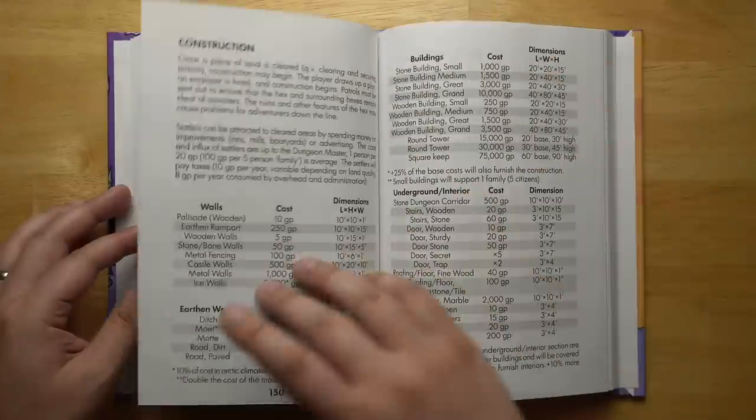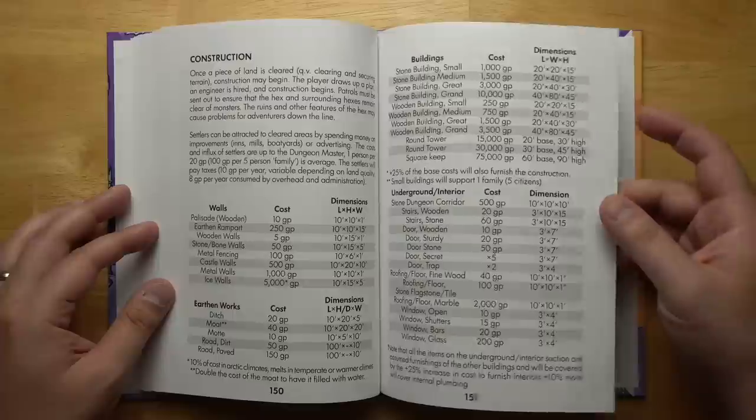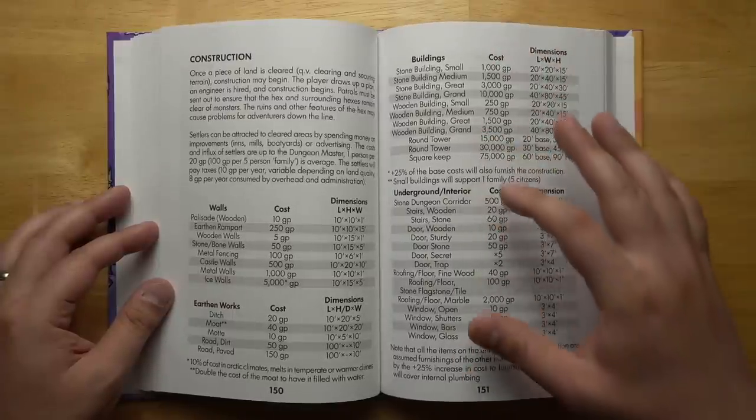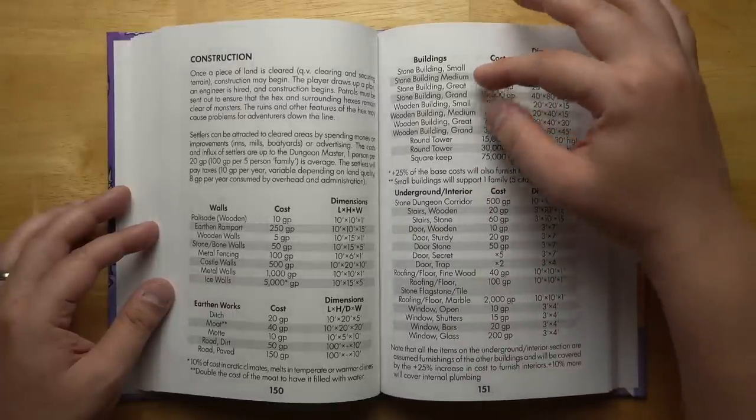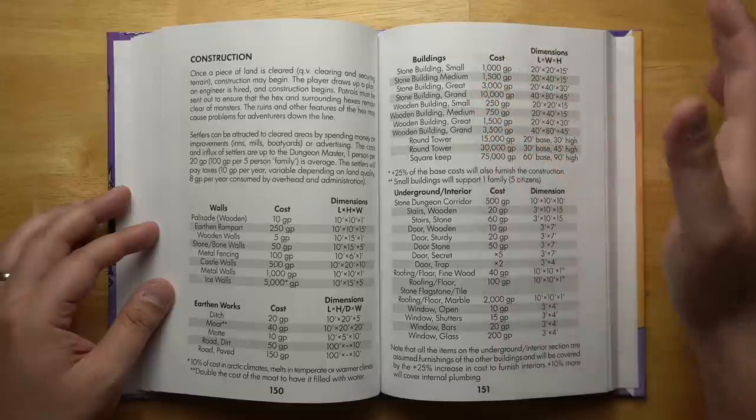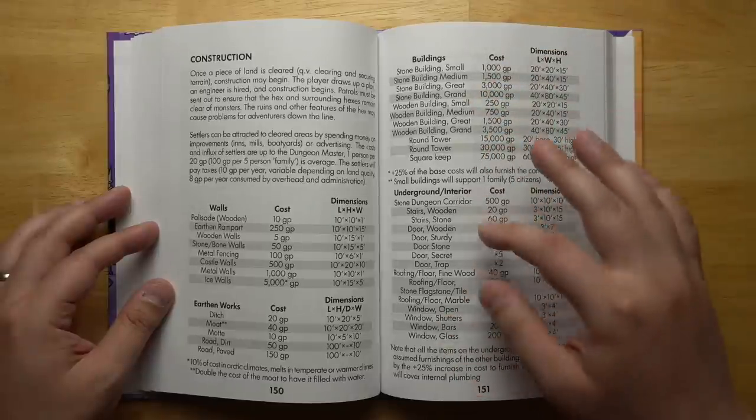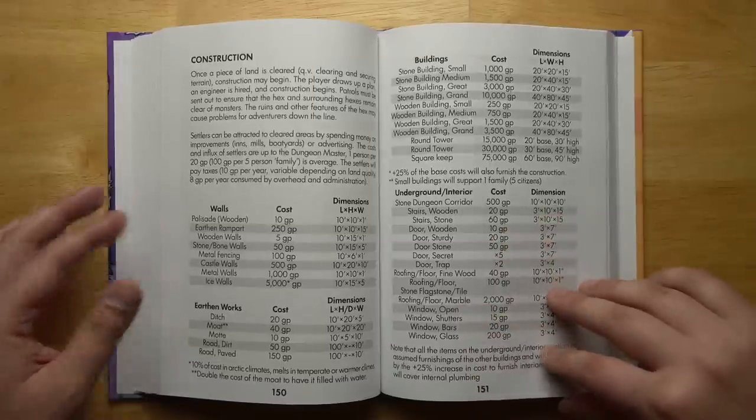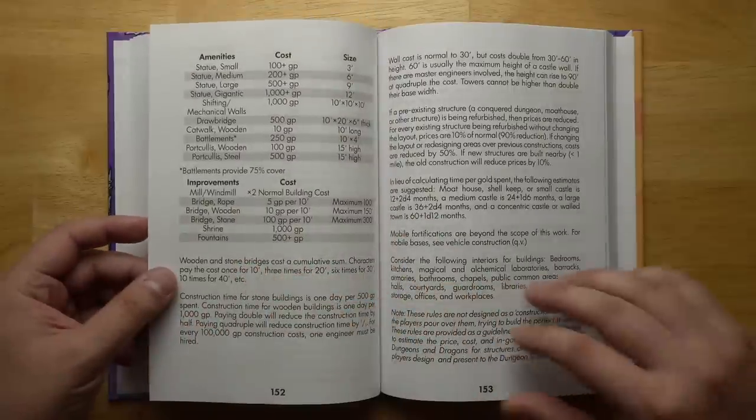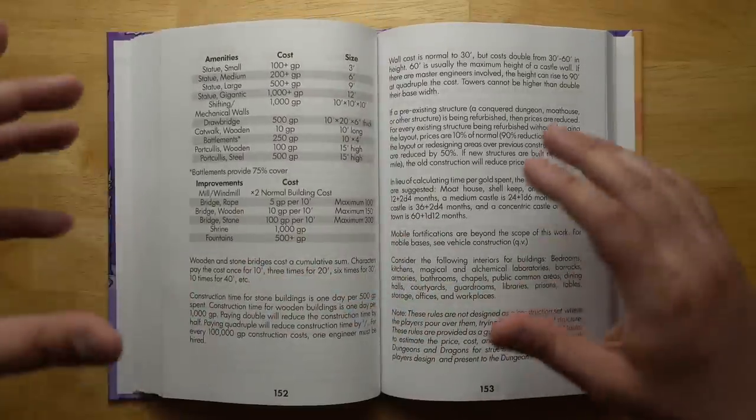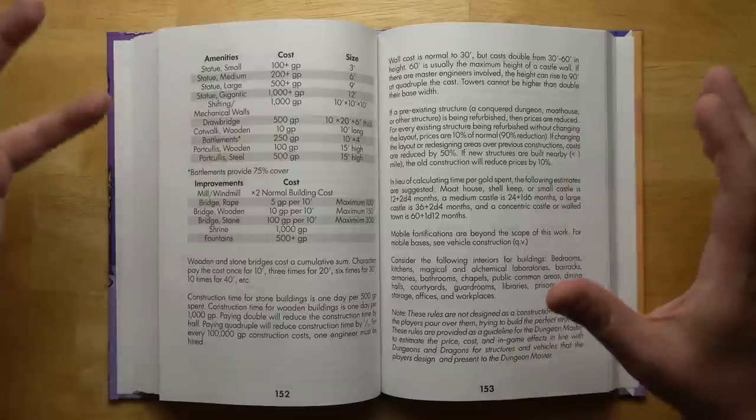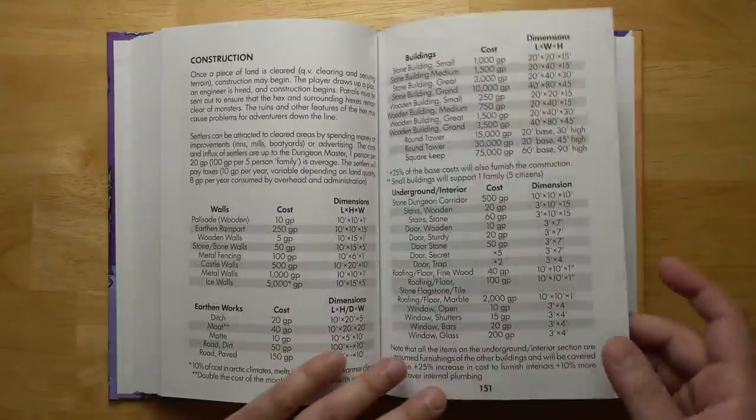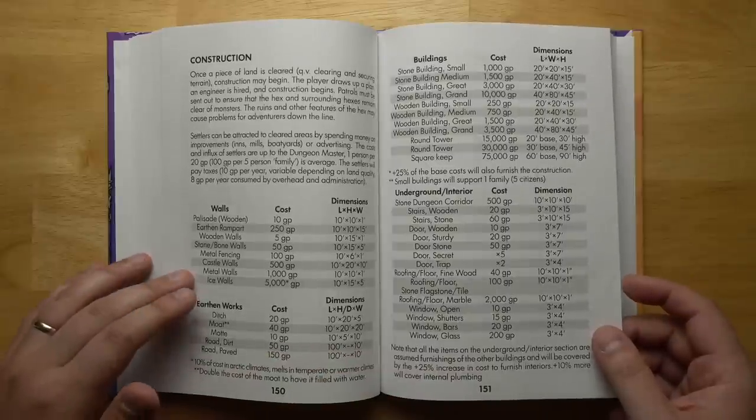We have a section on construction and how to build, or the cost at least, and the time for building different types of buildings. Everything broken down both more abstractly, just like large stone buildings, large wooden buildings, and more specific things like the cost for doors, windows, roofing. So it really depends on how granular you want to get there.